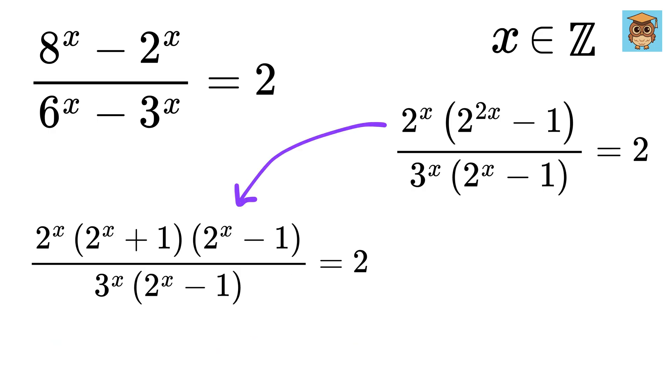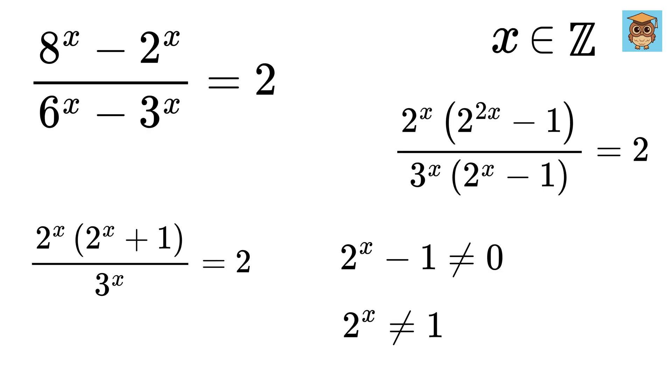So write this here in numerator. Oh, look! This 2 to the x minus 1 will get cancelled out. And we are left with this! But we need to take care of the fact that 2 to the power of x minus 1 is not 0, which means 2 to the power of x is not 1 or x is not 0.